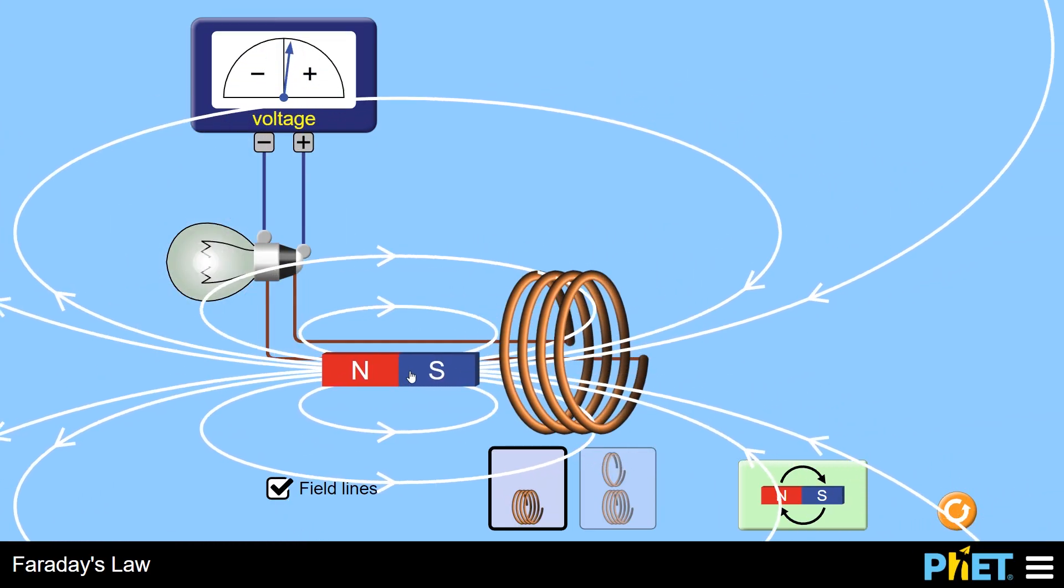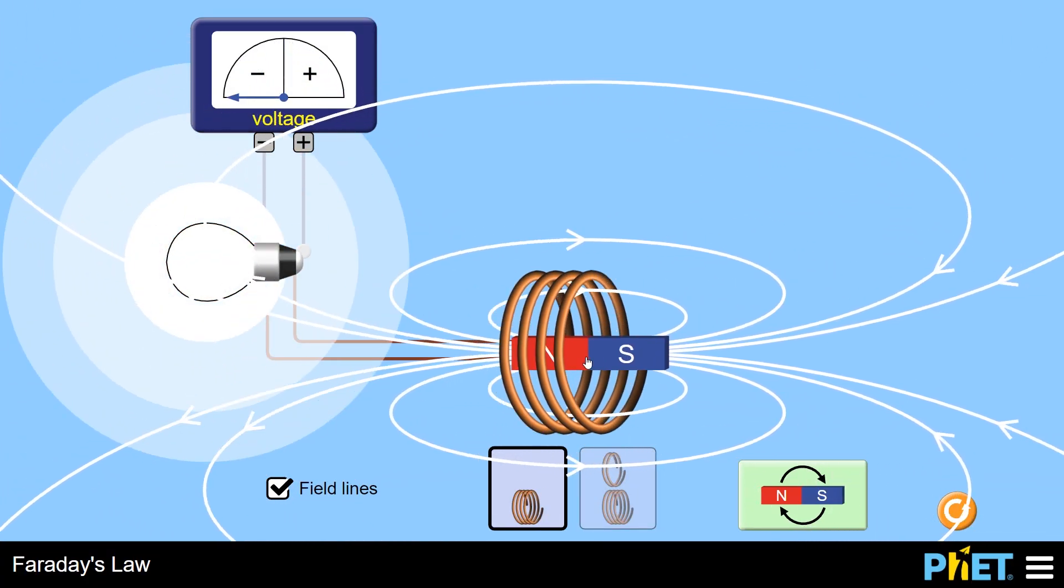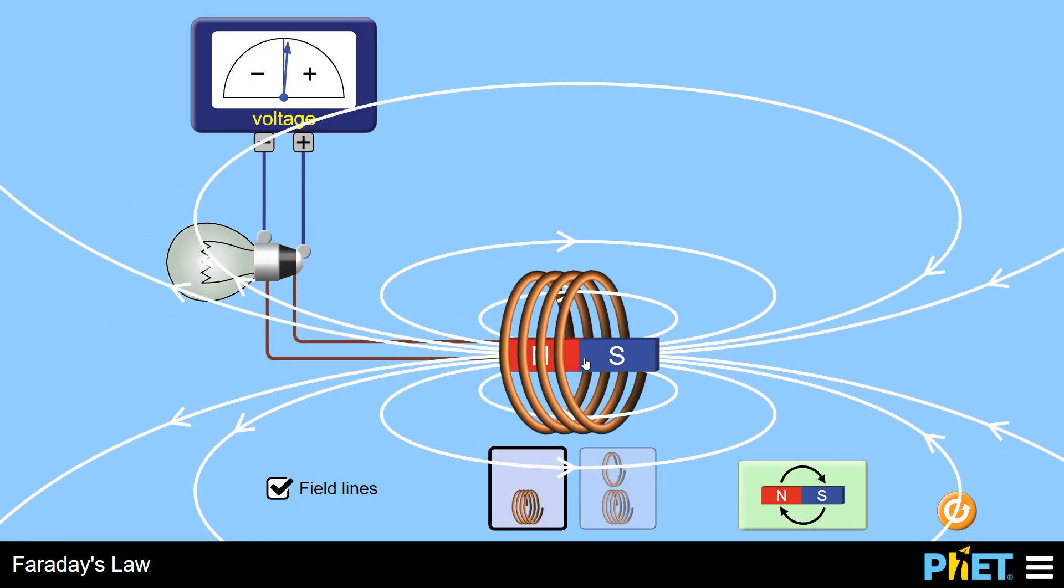And this is the generator effect. This is the principle behind electric generators that we will look at in the next video. It should be noted as well that if the induced potential across that coil is across a complete circuit, then a current will also flow.